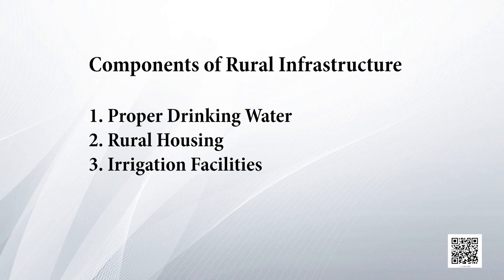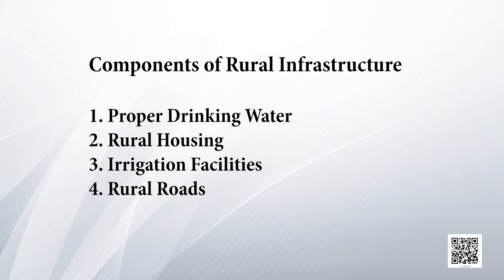The next component is irrigation facilities. Since most people in rural areas are dependent upon agriculture, irrigation facilities form an integral part and should be provided free of cost or at subsidized rates. The next component is rural roads. During floods or any natural calamity, rural areas are worst affected because the roads are not all-weather roads, breaking the link between urban and rural areas. The government should provide all-weather roads so that they stay connected 365 days a year.